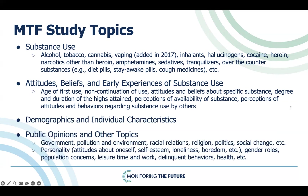Demographic and individual characteristics are included, as well as high school experiences such as average GPA, days truant, and intentions for attending college. Examples of other topics include public opinions about government, pollution and environment, sex roles and family-related issues, discrimination, and caregiving burdens. Personality variables include attitudes about oneself, self-esteem, loneliness, risk-taking, trust in others, and boredom.